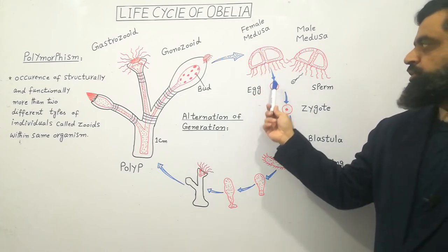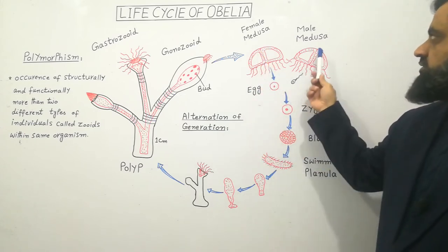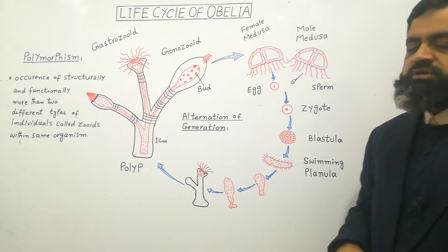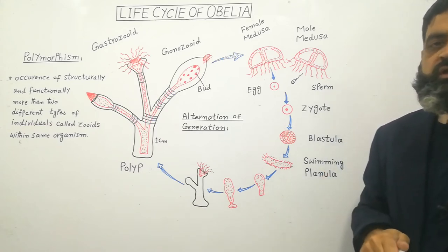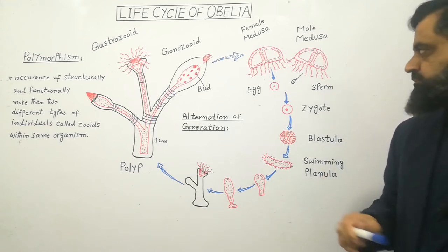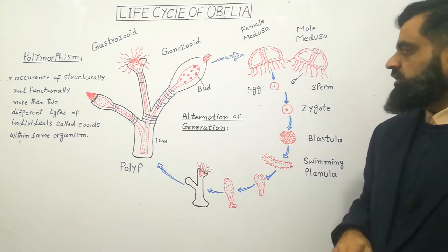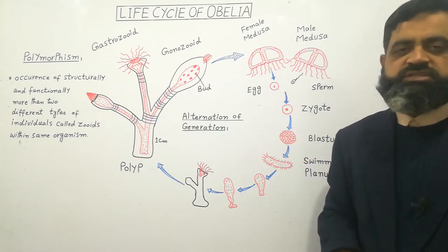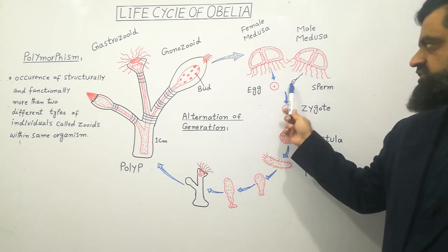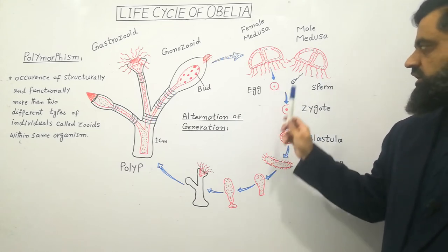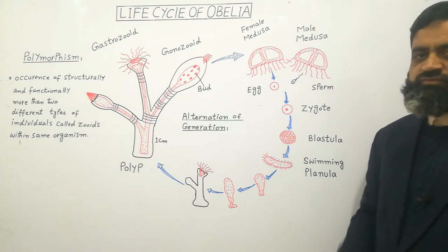Female Medusa produces eggs in its gonads while Male Medusa produces sperms in its gonads. Male gametes and female gametes — eggs and sperms — are released in the water where fertilization takes place. After fertilization, a zygote is formed.